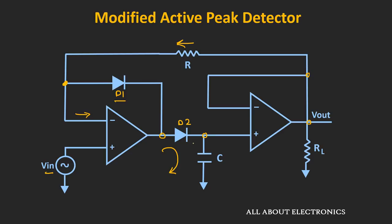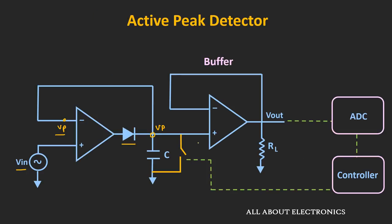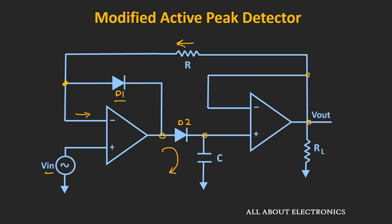The response time of the circuit also depends upon the response time of the diode as well as the response time of the op-amp, and moreover, it also depends upon the charging time of the capacitor. But if these components are fast enough, this particular circuit will be able to respond to fast signals, while the circuit seen previously will not. For very high-speed peak detection, Schottky diodes are preferred over signal diodes because they have a very quick response time.